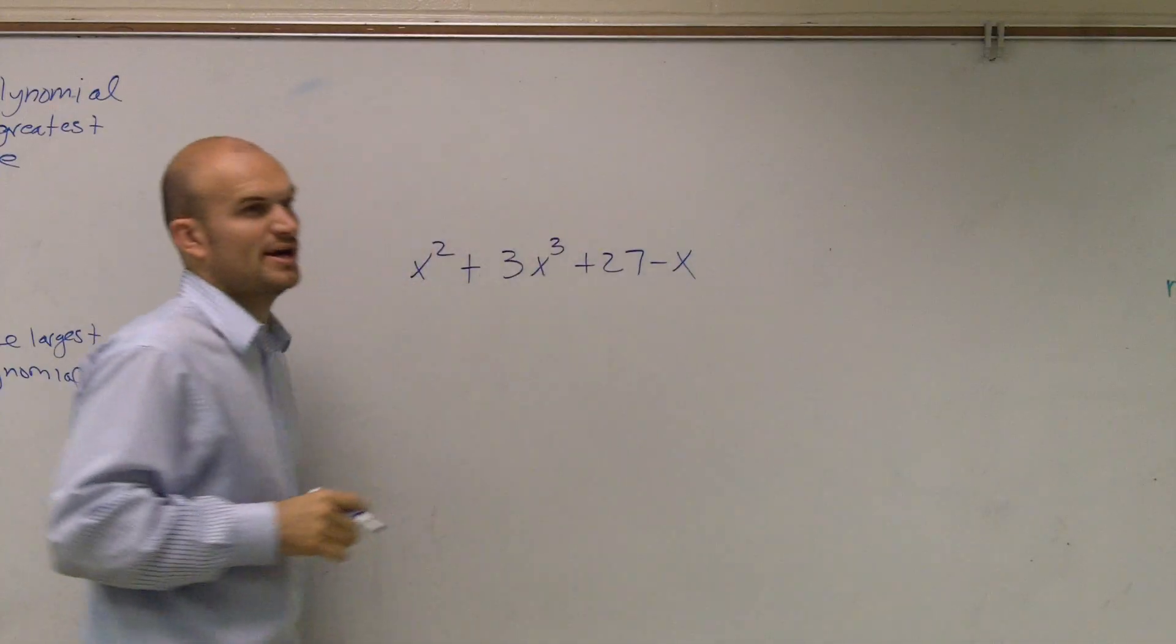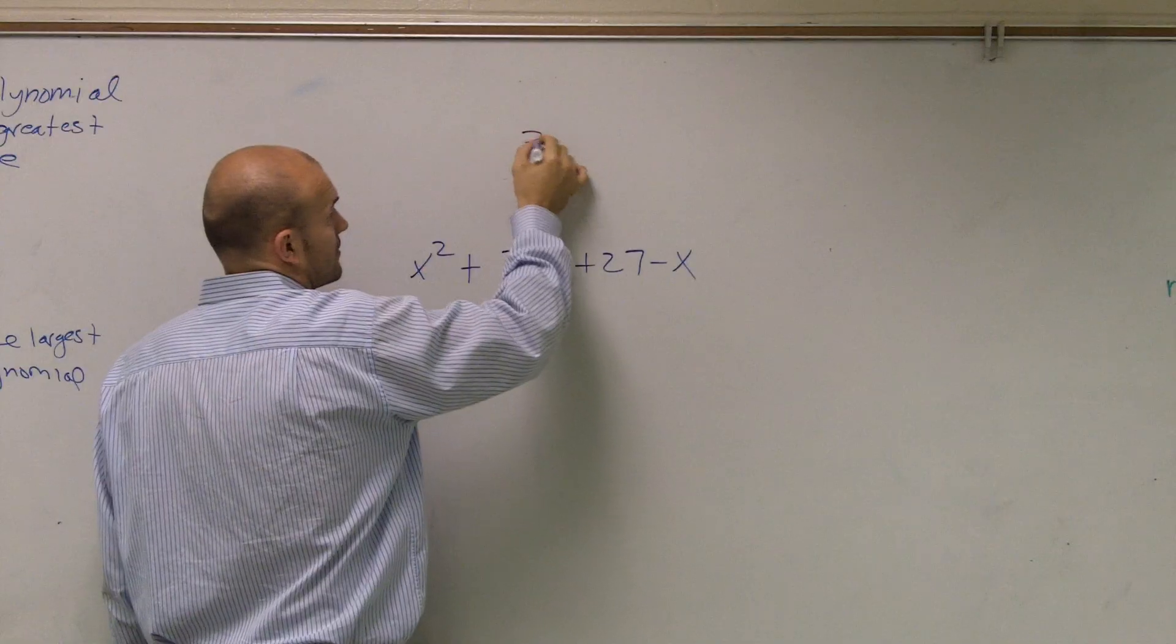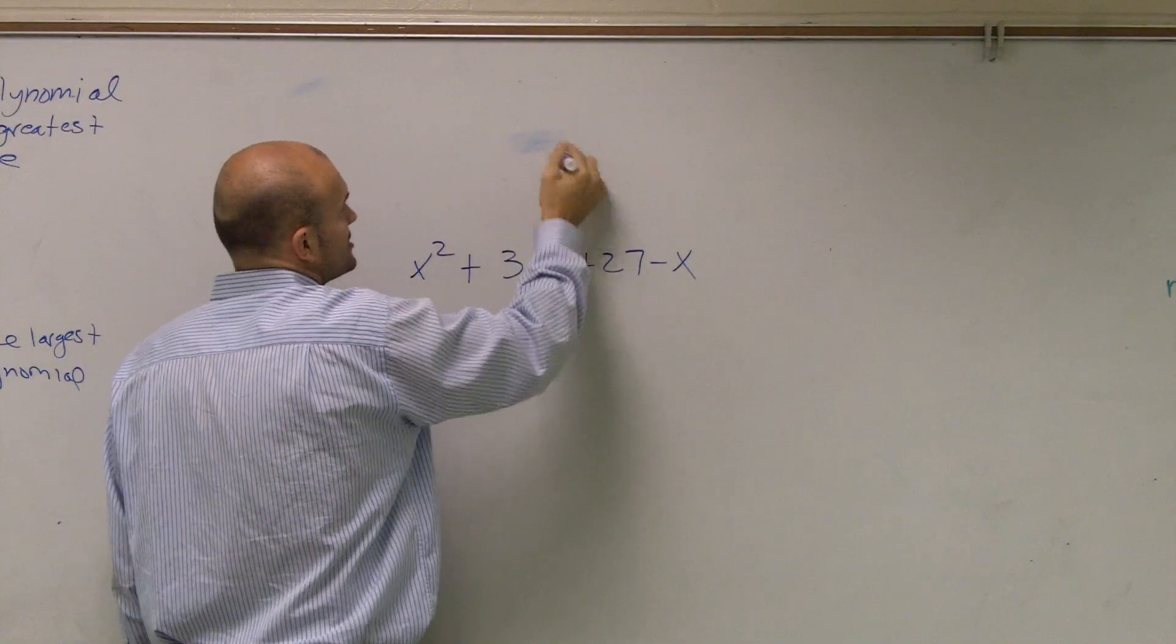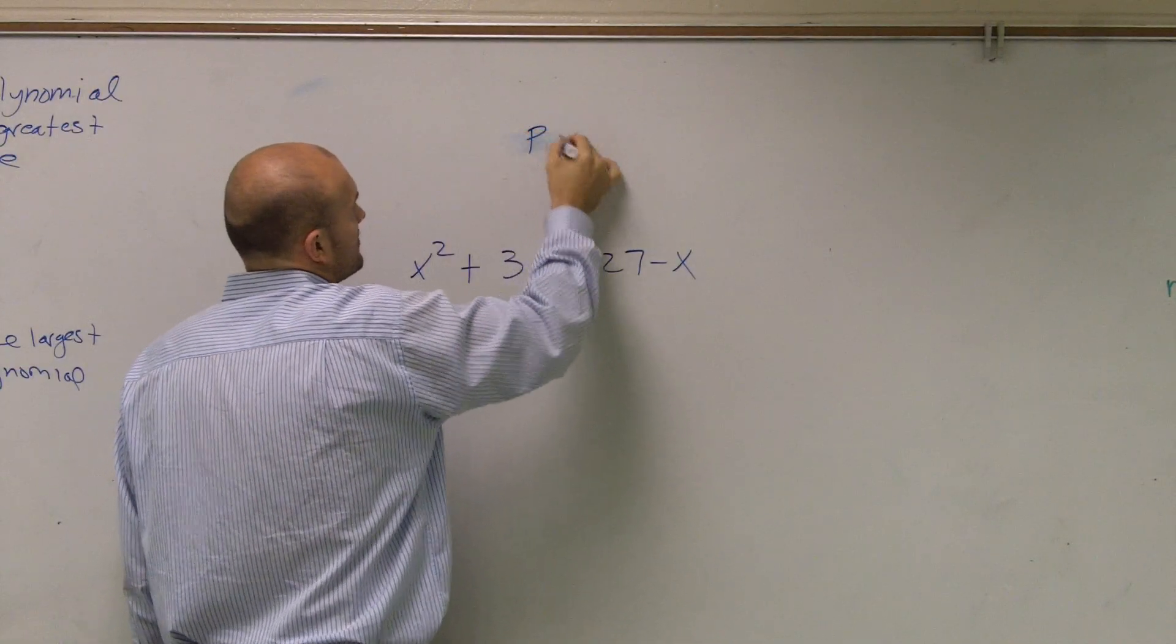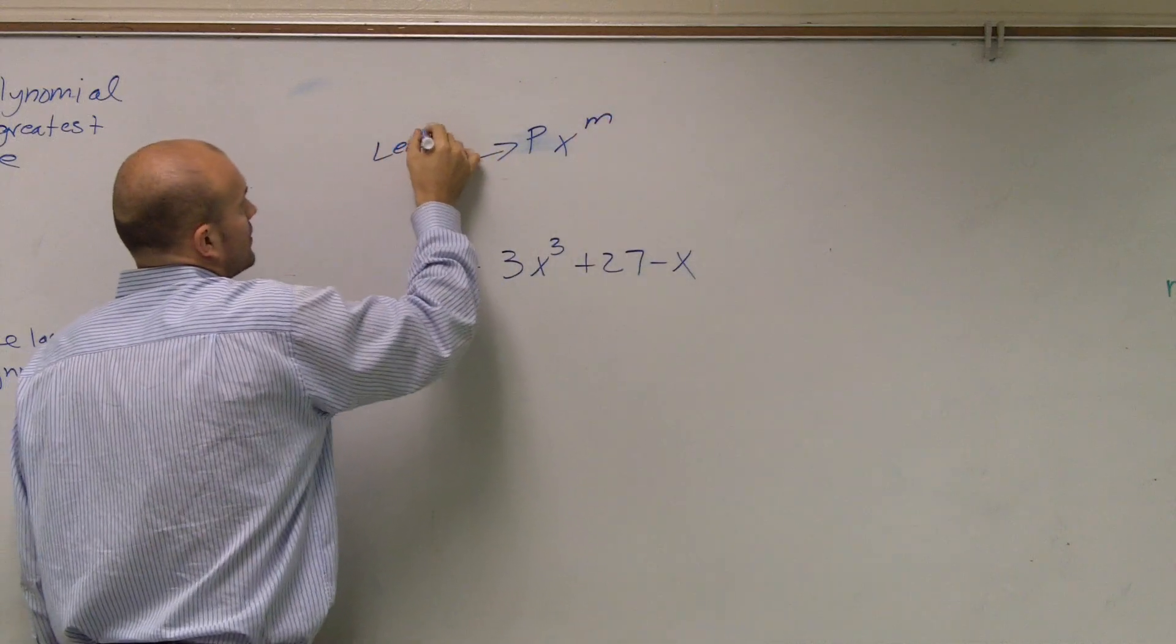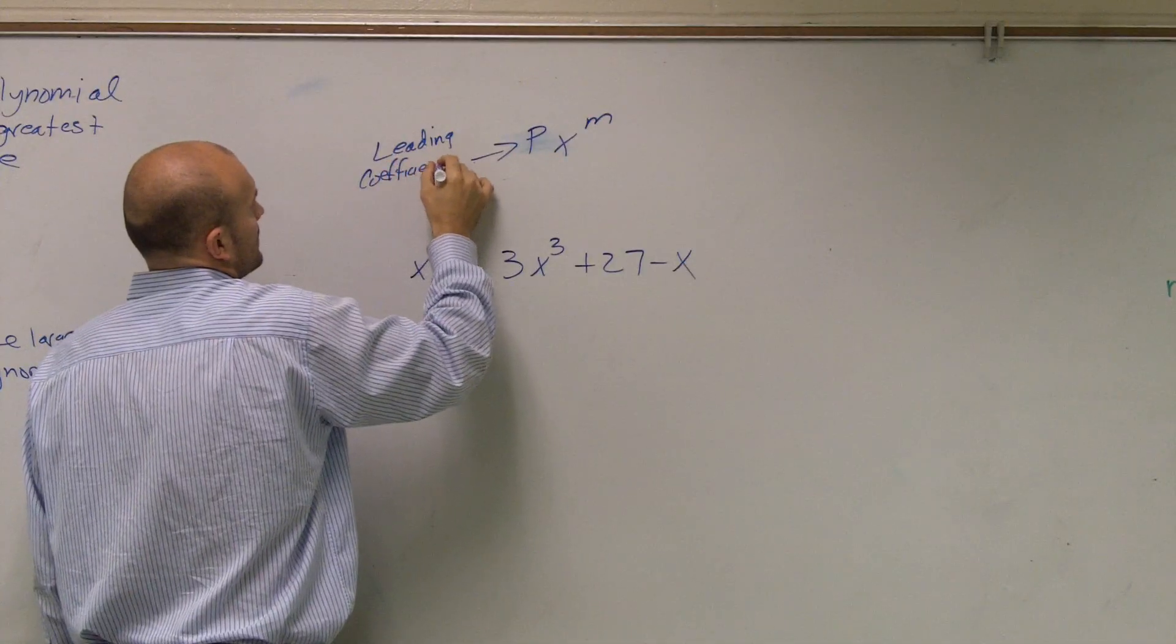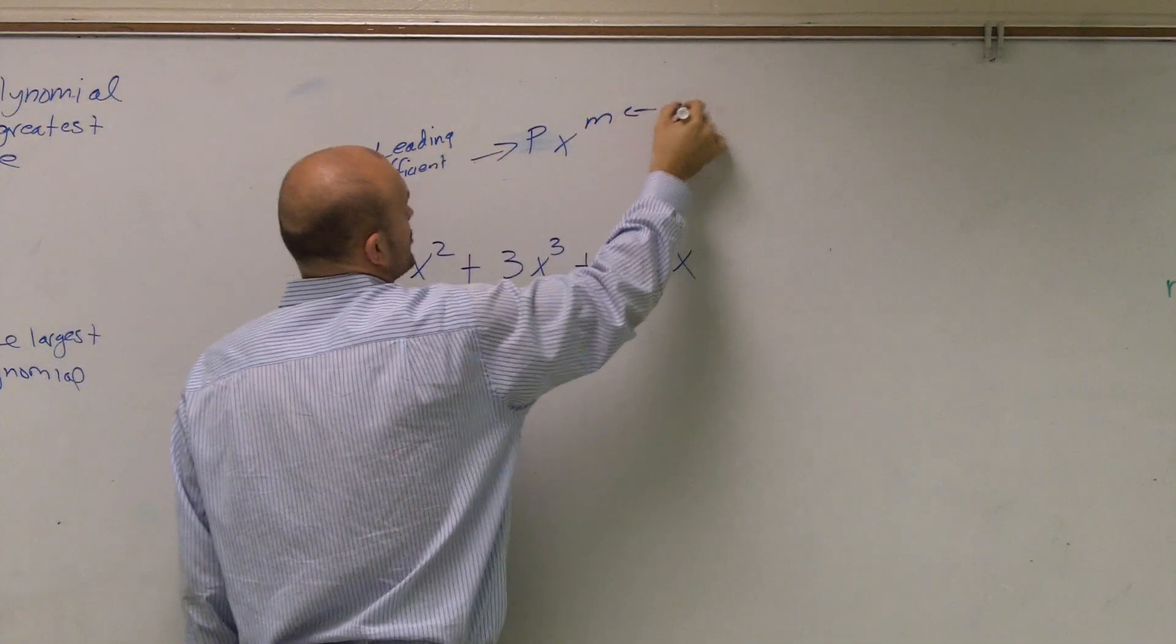First thing we need to know is—I'm going to just do an example here. Let's do p times x to the m, where p would be our leading coefficient and m is going to be our degree.